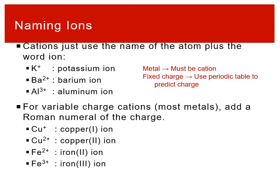Additionally, these three metals — potassium, barium, and aluminum — are all fixed charge. Potassium is in group 1A, barium is in group 2A, and aluminum is just a fixed charge metal. So when you say potassium ion, the person you're talking to can look at the periodic table and predict the charge. That's why you don't have to say potassium plus one — you can just say potassium ion, and whoever you're talking to can infer that it's K+. When writing the symbol, you would still use K+, but if writing out the words, it would be potassium ion.